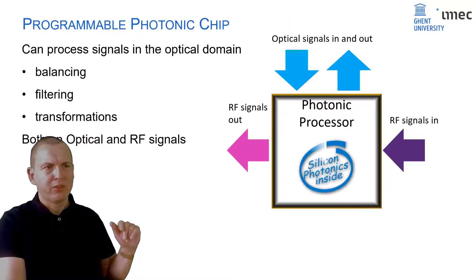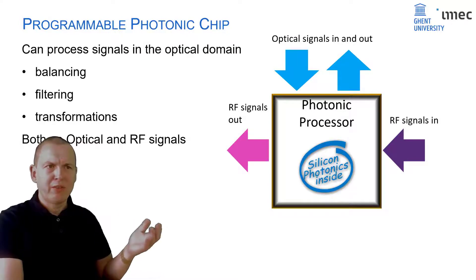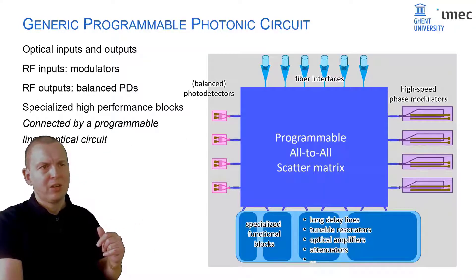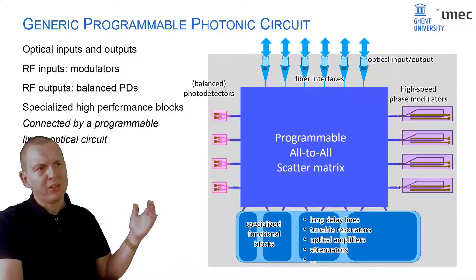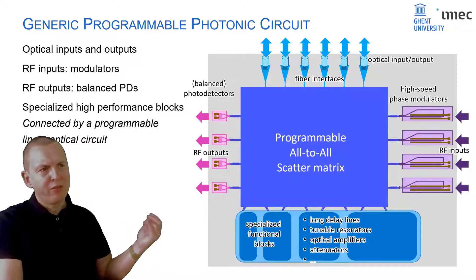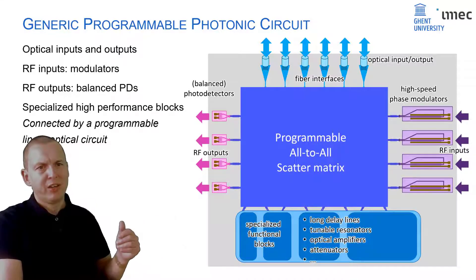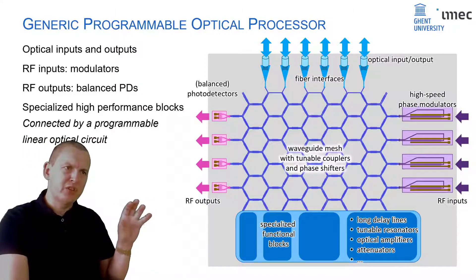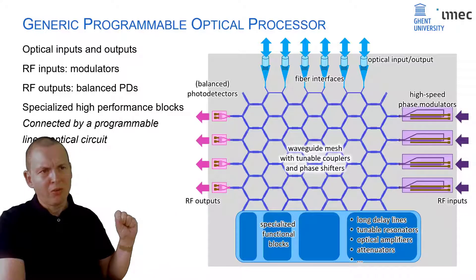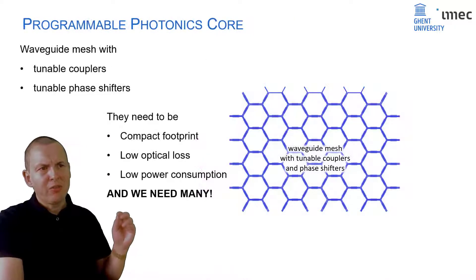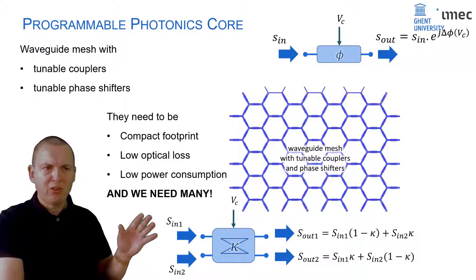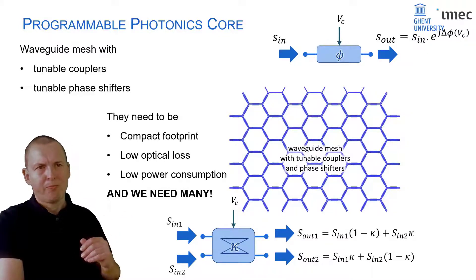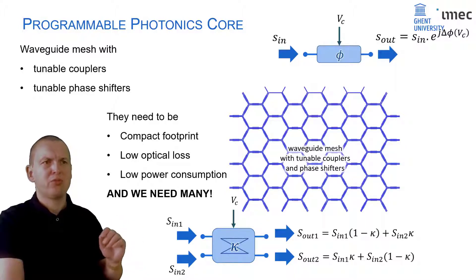Such a chip would have optical signals going in and out, but also high-frequency electronic signals going in and out, useful for many applications. In more detail, you have optical inputs and outputs, and electrical signals that arrive on the chip are converted into optical signals by a high-speed modulator. Only after they've been processed in the optical domain are they converted back to electronic signals. The internals of the chip consist of a hexagonal mesh with tunable couplers and phase shifters — requiring only two types of components: one that couples two waveguides together with tunable coupling amount, and one that introduces a phase delay. With these, you can couple all inputs to all outputs in any way you like.